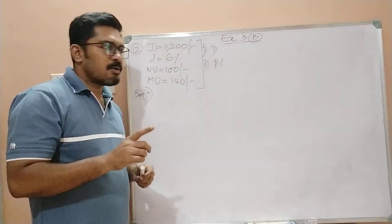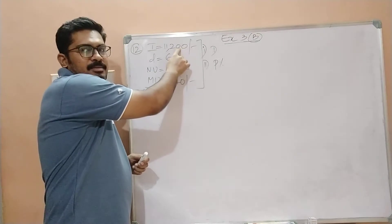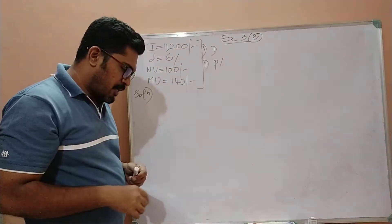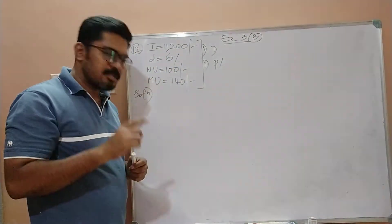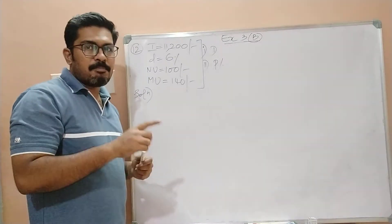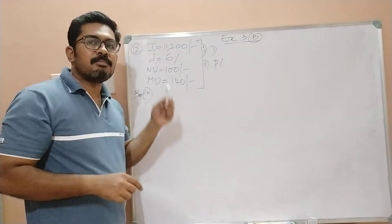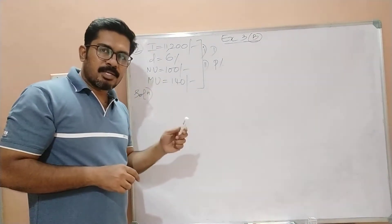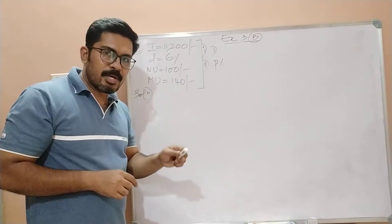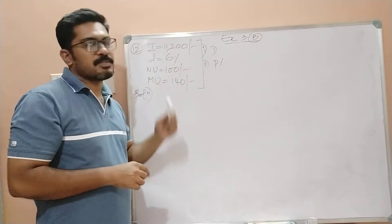A man invests 11,200 rupees in a company paying 6 percent per annum. A company paying 6 percent per annum means the dividend percentage given by the company to the investor is 6 percent. D is equal to 6 percent.